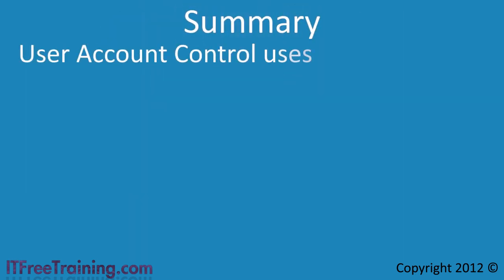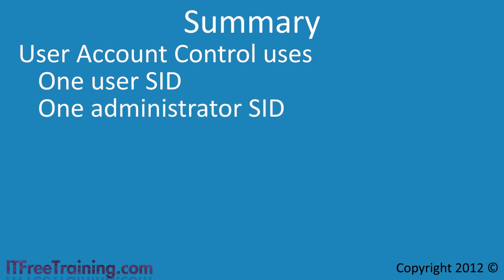To summarize: User Account Control uses two SIDs for users with administrator access. The first is a user SID and the second is an administrator SID. For normal activity, the user SID is used, which prevents malware and other damaging software from installing itself on the computer. When administrator action is required, Windows will change to the administrator SID. This is usually indicated by a shield icon next to the button, which helps protect the computer from unwanted software using administrator rights.